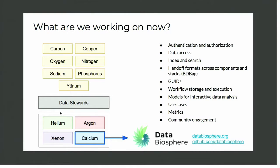What are we working on now? The ten funded groups have all been given names of elements as their identities: Carbon, Copper, Oxygen, Nitrogen, Sodium, Phosphorus, and Yttrium are working on project governance and key capabilities. The data stewards are there to help us understand and learn about the data. Helium, Argon, Xenon, and Calcium are what we're calling full stacks — groups with a full stack of technical capabilities to use for piloting. Brian O'Connor this morning mentioned the data biosphere, which is what Calcium has as our repository.